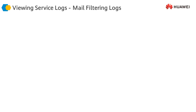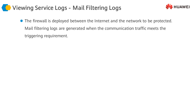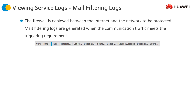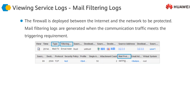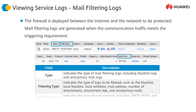Mail filtering logs are another type of service log, generated when traffic meets certain triggering requirements. Triggering criteria can be set such as sender or receiver email address, email subject, attachment name, and maximum number of email attachments. The type field points to the type of mail filtering log, including blacklist logs and anonymous mail logs. The filtering type field indicates the type of logs to be filtered, such as blacklist, local blacklist, local whitelist, mail address, number of attachments, attachment size, and anonymous mails. The mail protocol field indicates which mail protocol is being used, for example SMTP, POP3, and IMAP.